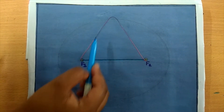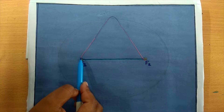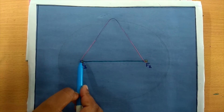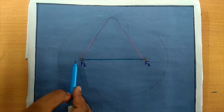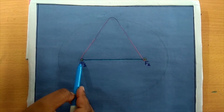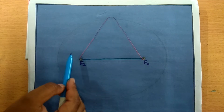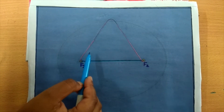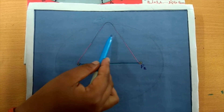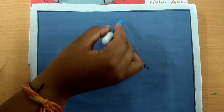First, we take a thread and fix the two ends of the thread at the two nails at F1 and F2. With the help of a pencil, stretch the thread in a circular motion.